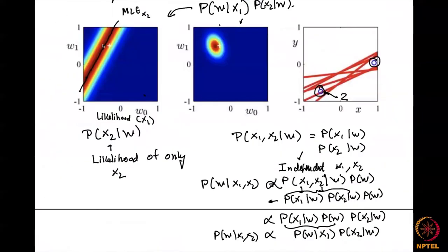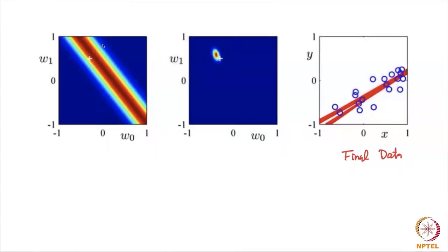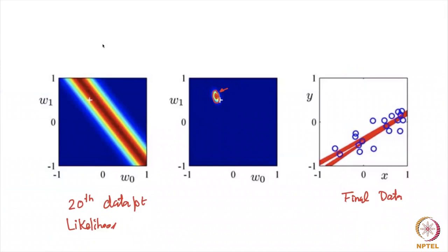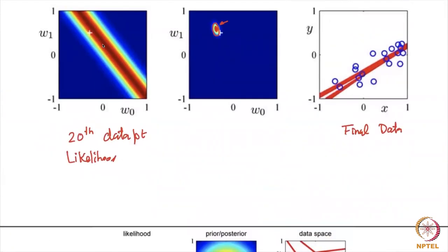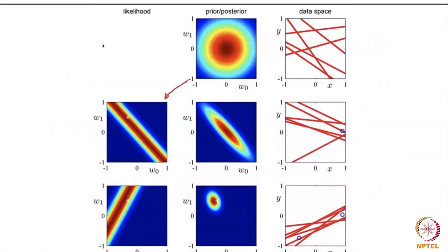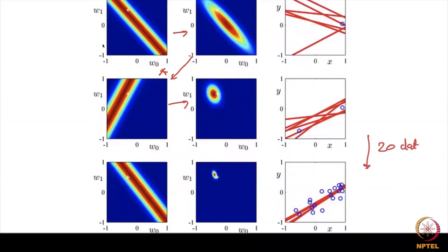By the time you reach the 20th data point, the likelihood of each new data point further constrains the parameter space. The final Bayesian estimate shows that the lines have converged to a very small region — 95% of the lines lie within a very tight band. Prior multiplied by likelihood gives a posterior; repeat this 20 times and you get the final Bayesian estimate.